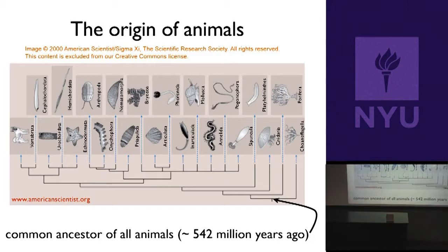If you look at the evolutionary tree of all organisms, the ones familiar to us are a very, very small portion of that tree. There's this big tree of life, and up in one little corner is all animals, plants, and fungi—all of those macroscopic things we think about from day to day. If you zoom in on animals, you can see familiar things like a dog, or us, or a frog—vertebrates, animals with a real backbone. But there's quite a bit of unfamiliar territory here too.